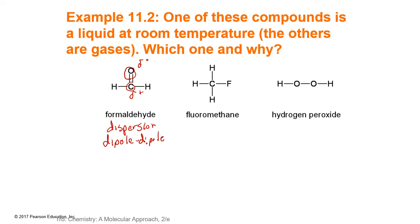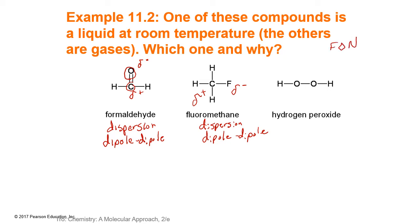For fluoromethane: everything has dispersion forces. We do have dipole-dipole because that fluorine is going to be partial negative and the rest of the molecule is partial positive. However, our fluorine is not directly connected to hydrogen, so we do not have hydrogen bonding. Remember, hydrogen bonding is hydrogen on the phone — directly connected to fluorine, oxygen, or nitrogen.